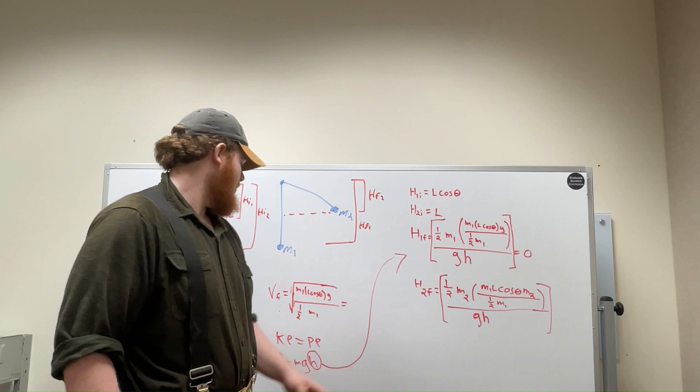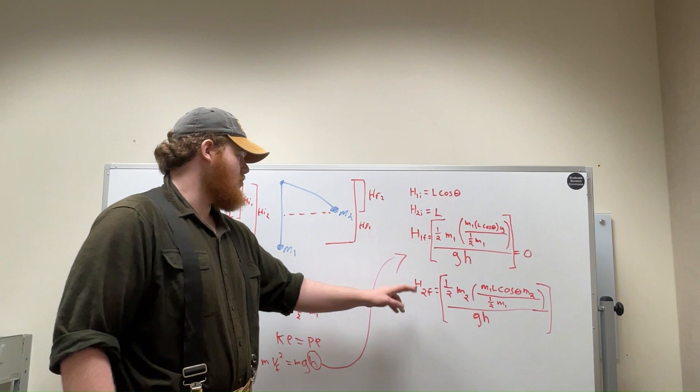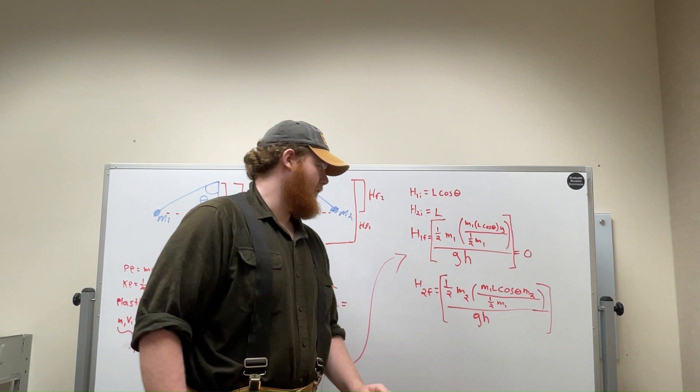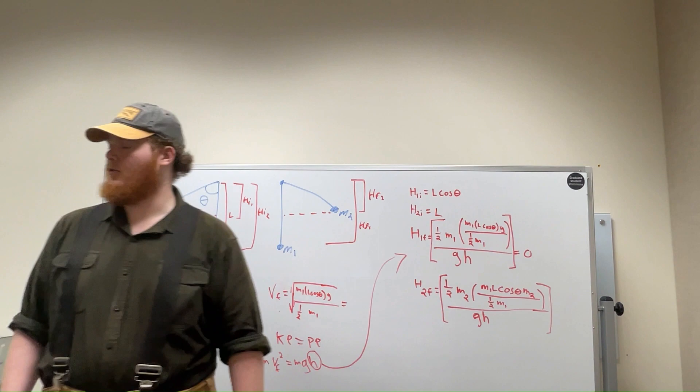H1 final is 1/2 M1 times V final squared over GH. H2 is 1/2 M2 times V final for the second ball, which means it just has an M2 in the velocity final equation over GH. Jose will now explain.